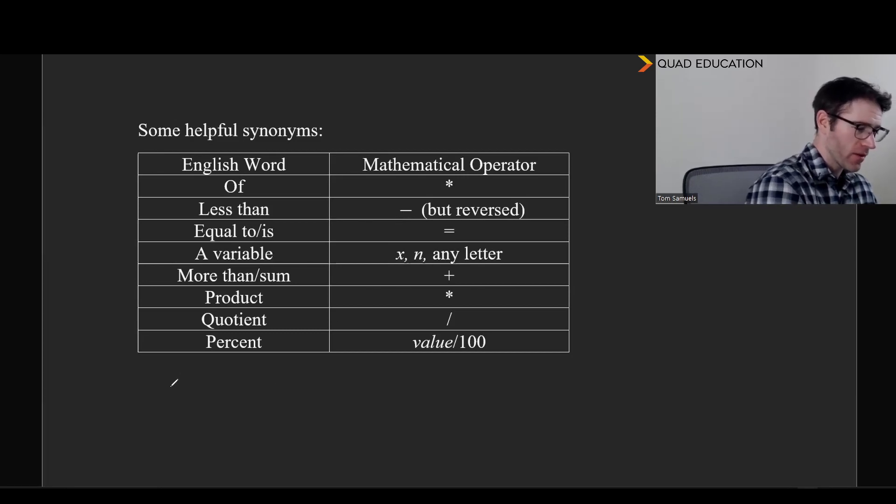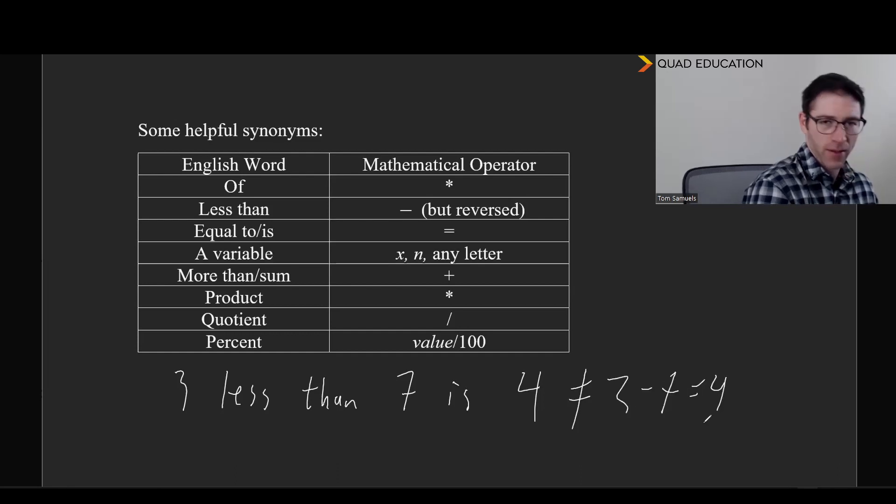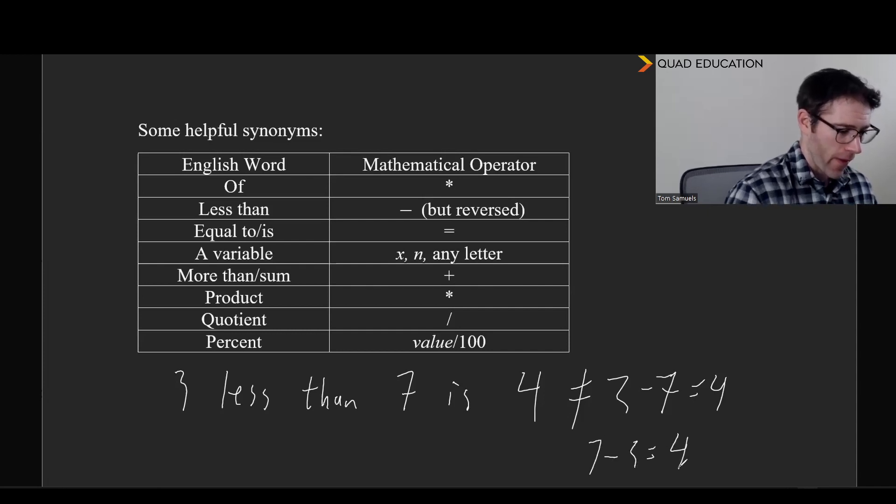but means minus, but is reversed. So, for example, this is one of the other kind of tricky ones. So, if you saw something like 3 less than 7 is 4, that does not mean 3 minus 7 equals 4, because it doesn't. So, the way that we say this is the opposite of the way that we write it in math. So, this is 7 minus 3 equals 4. So, other than that, these are mostly pretty intuitive and self-explanatory.